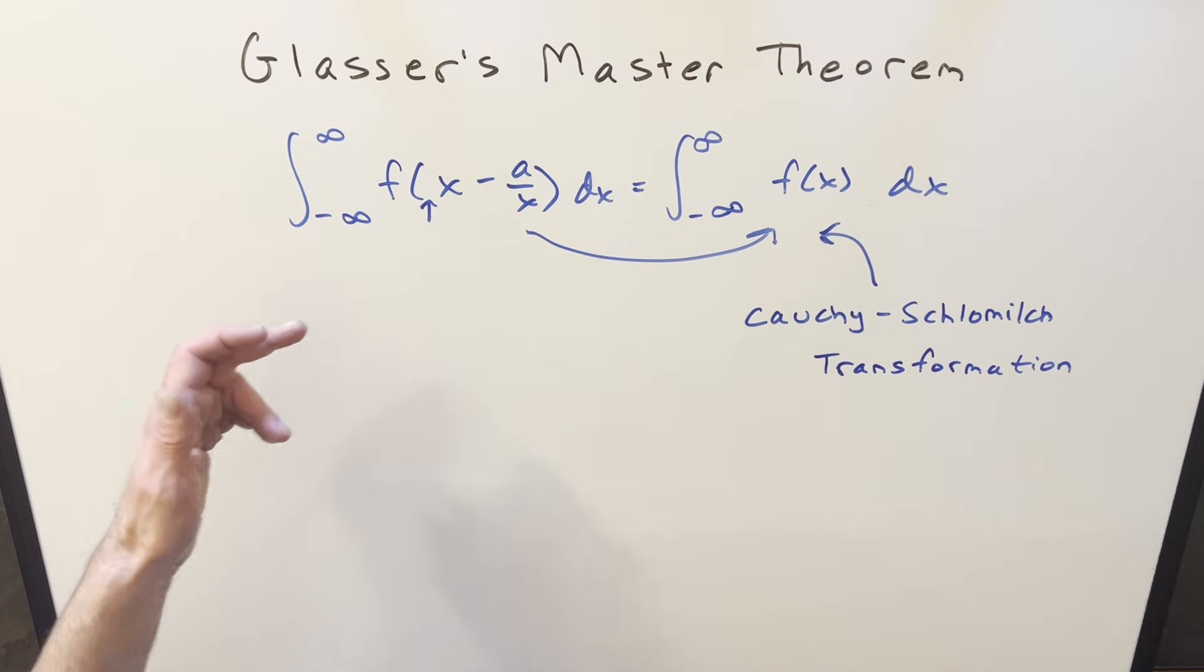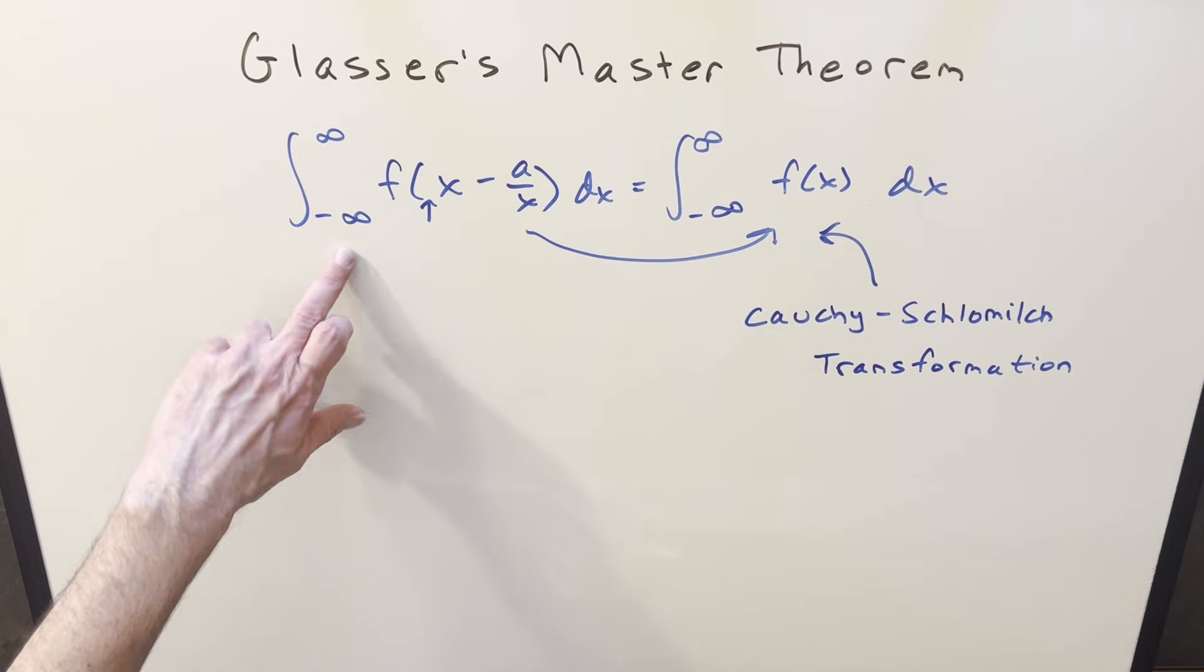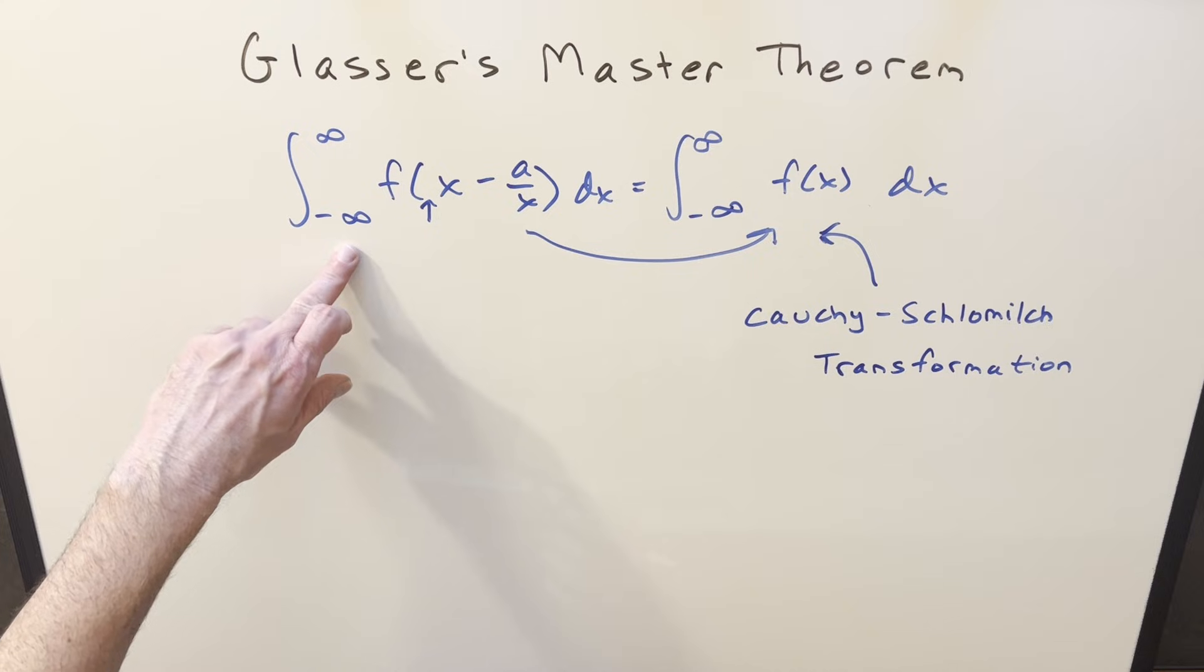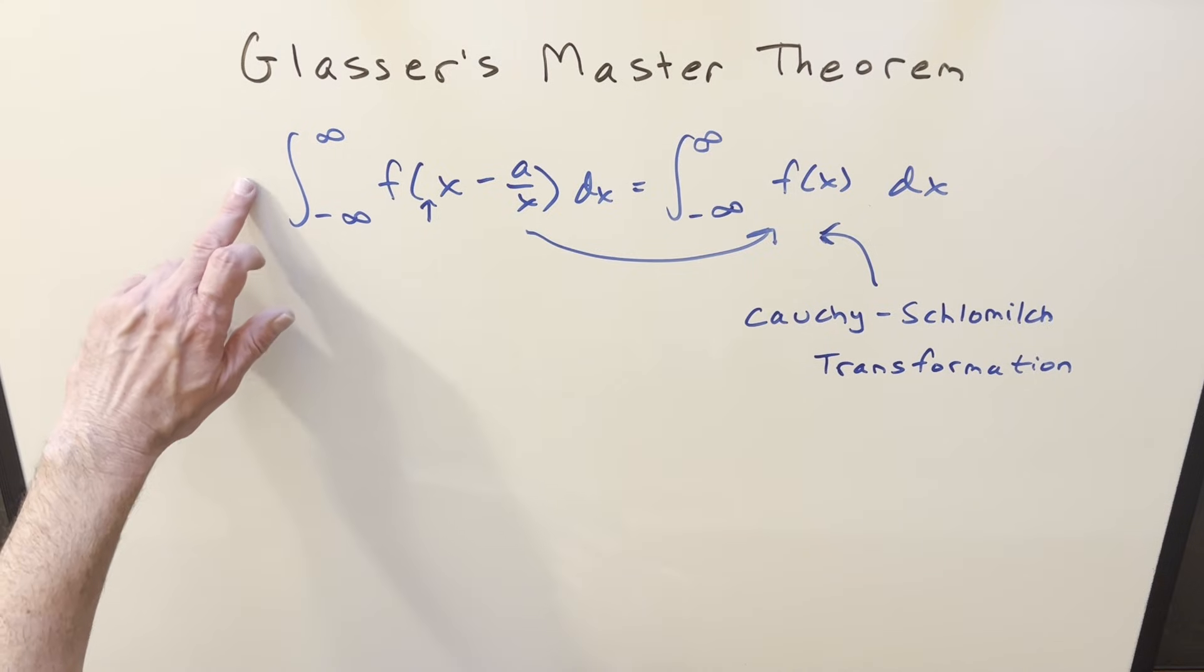Like if the lower bound was 0, as long as we have an even function, we can kind of switch back and forth. If this was an even function, you could bring a 2 out and change this to a 0, or you could go the other way and bring a half out front.